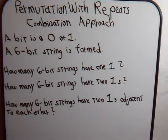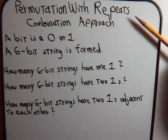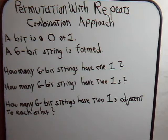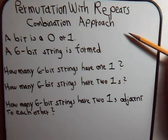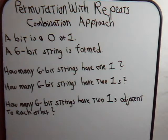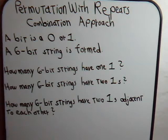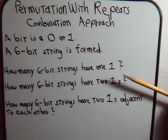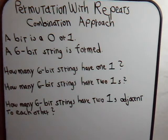We've been re-examining permutation type problems where all the objects involved are not necessarily distinct, so that we have a permutation with a certain amount of repeats. In this video we're going to use the formula that we developed in previous videos to solve this kind of problem, and also we're going to use the combination approach. Here's the problem — it has three different parts. We know that a bit is either a zero or a one. Suppose that a six-bit string is formed. First: how many different six-bit strings can we make that have only one numeral one? Second: how many different six-bit strings can we have that have two numeral ones? And third: how many six-bit strings can we make where the two ones are adjacent to each other?